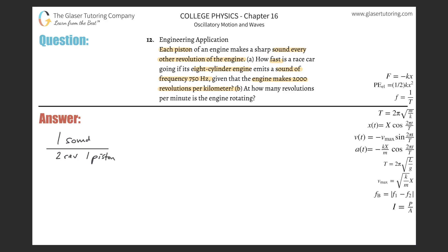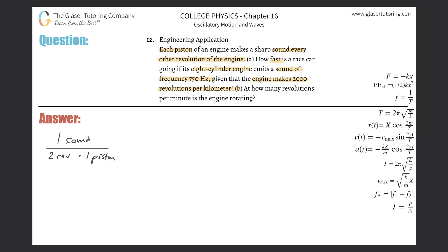This works out to be a multiplication of units in the denominator. So the conversion is: one sound per every other revolution per piston.